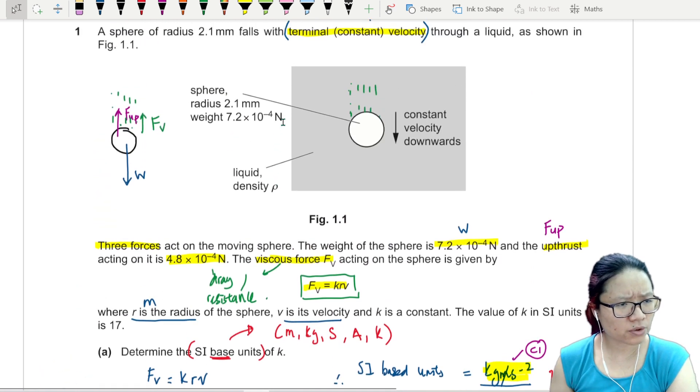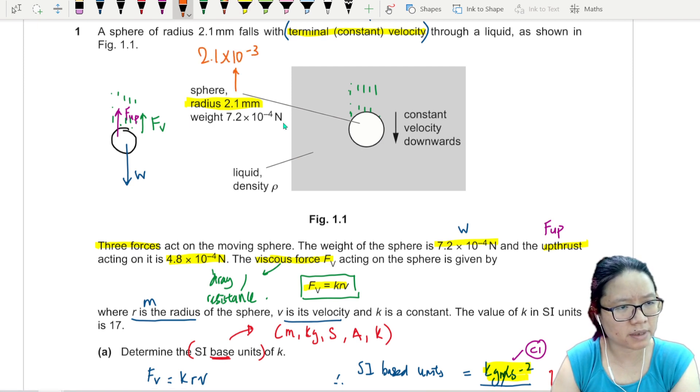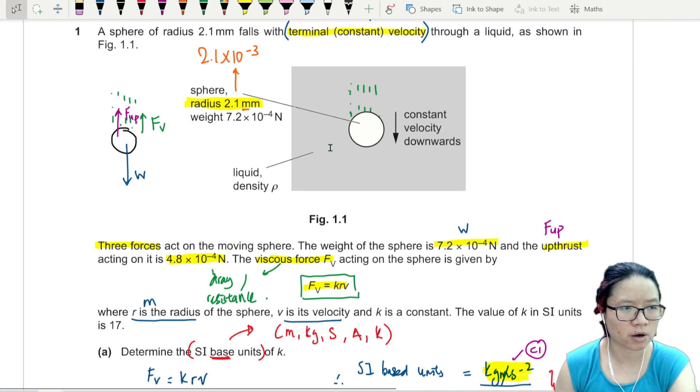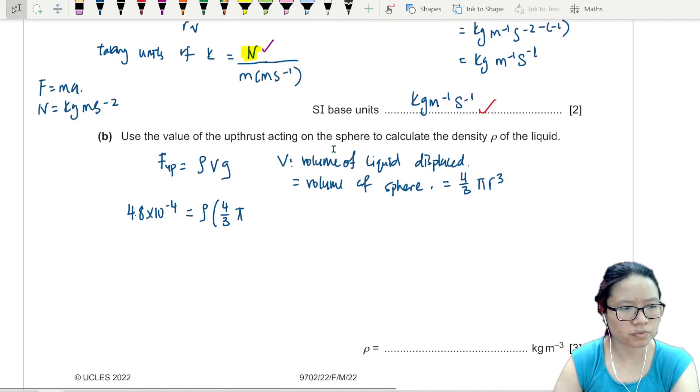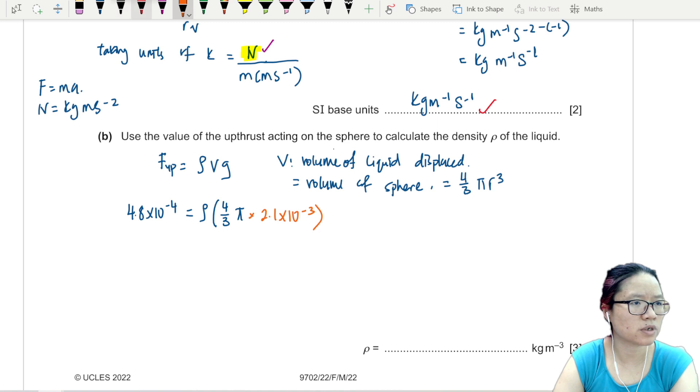I have upthrust 4.8 times 10 to the power of negative 4. We are looking for density. Volume is 4 over 3 pi r cubed. Please know the volume of basic shapes like sphere and area of a circle. We have radius here is 2.1, but we need to convert this from millimeter to meter, so 2.1 times 10 to the power of negative 3.